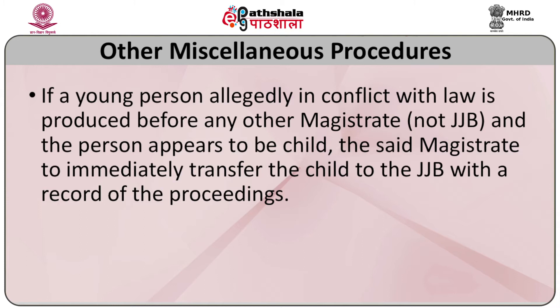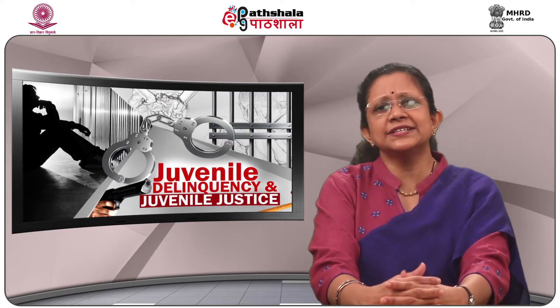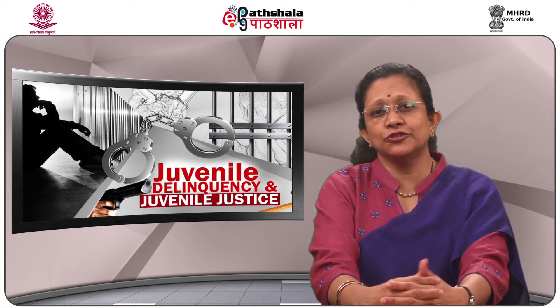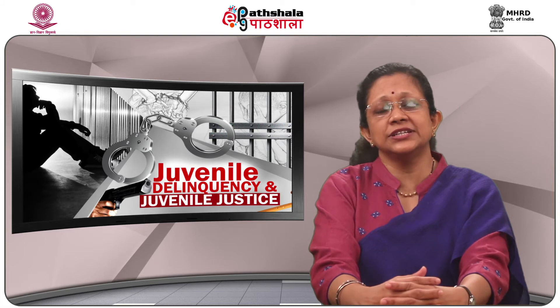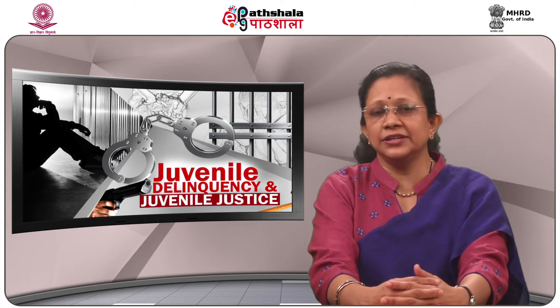Regarding miscellaneous procedures: if a young person alleged in conflict with law is produced before any other magistrate — not necessarily the Juvenile Justice Board — and appears to be less than 18 years of age, the magistrate shall immediately transfer that child to the Juvenile Justice Board. Similarly, if any person claims that they were a child at the time of commission of an offence, age verification and other processes would start. Even at any stage of case proceedings — during sentencing or after final disposal — age verification proceedings can be initiated.